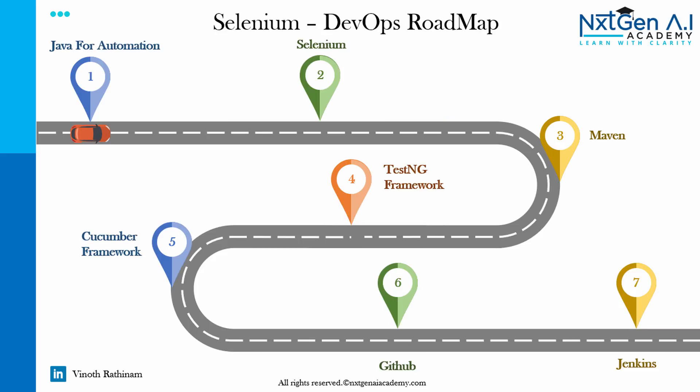First, the Selenium DevOps Roadmap. We will be using Java programming language for Selenium automation. A frequently asked question by most students is: is it possible for non-IT guys to learn Java? Yes — the programming knowledge for automation testers and Java developers are different. For QA automation, learning core Java is more than enough, so trust me it's going to be very easy. After completing Java, we will apply those concepts in Selenium modules.